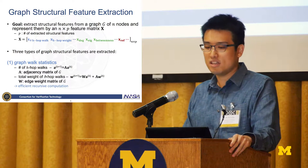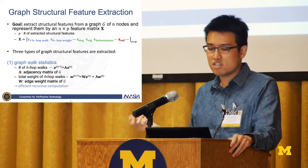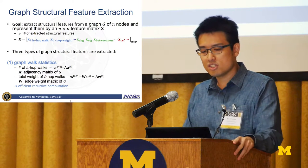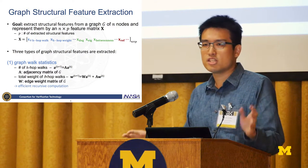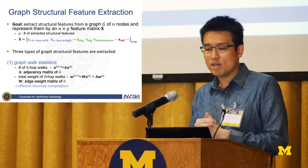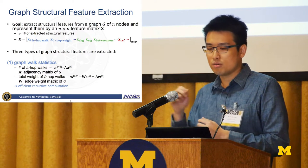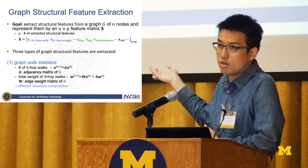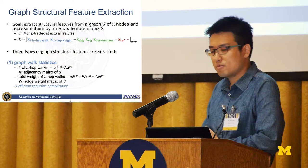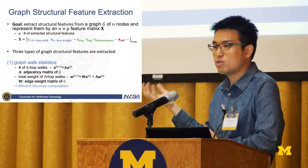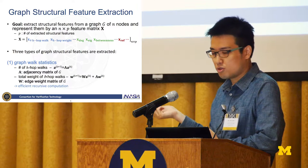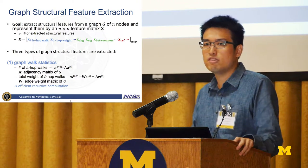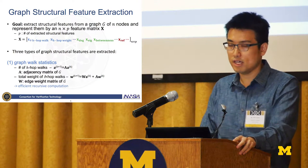We are also interested in the total weight of H-hop walks — the sum of weights from each node. There is a similar recursive form in terms of W, computed using the edge weight matrix W and the adjacency matrix A. This means graph walk statistics can be computed very efficiently because of this recursive relation.